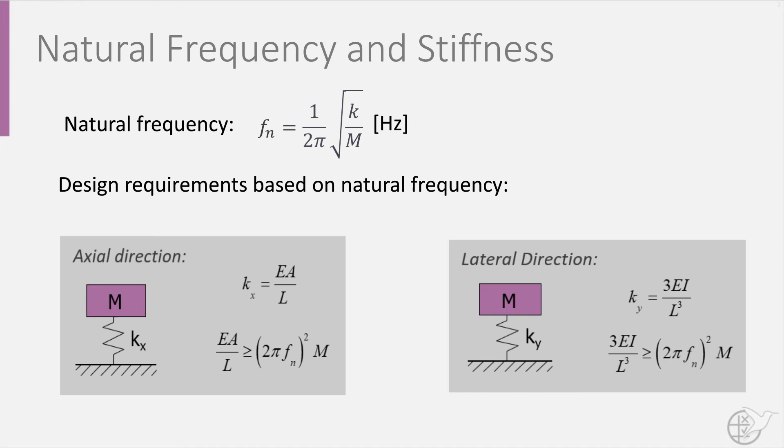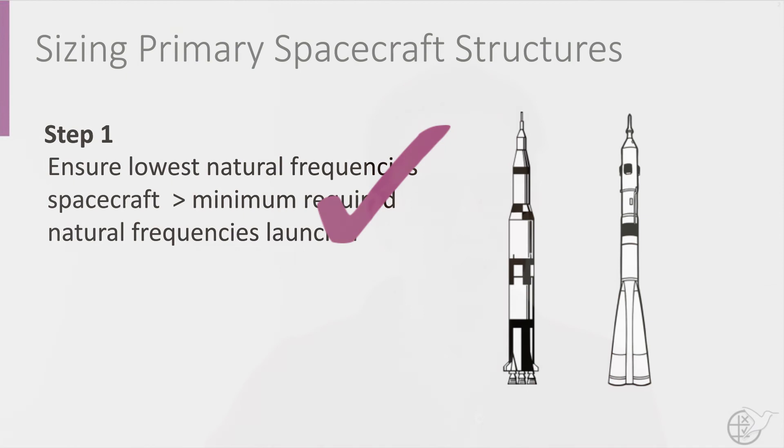Step two in sizing our spacecraft: we must also ensure that the spacecraft can withstand the quasi-static loads. These are the maximum stress at the clamp and the buckling load.